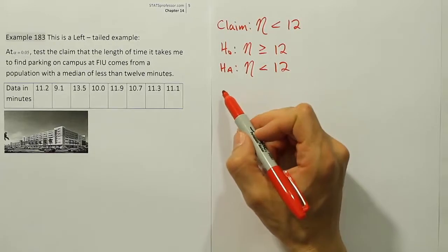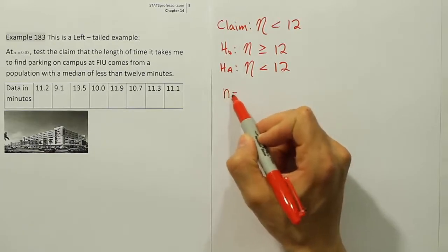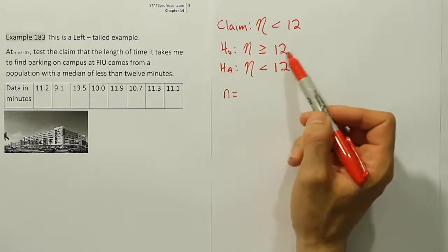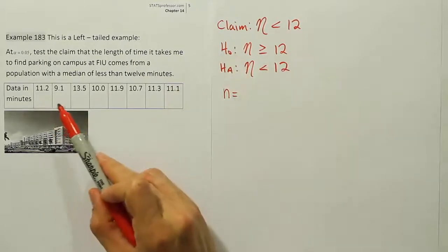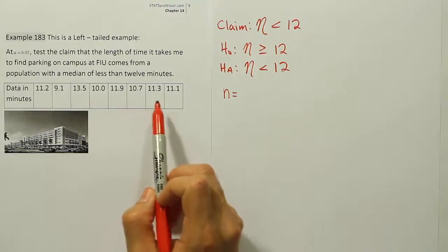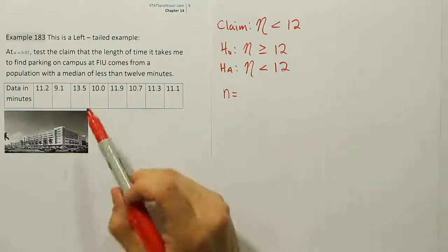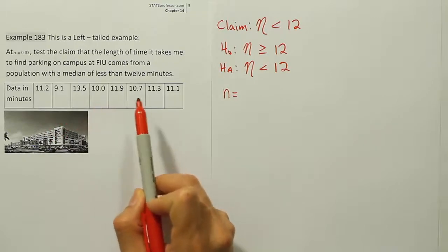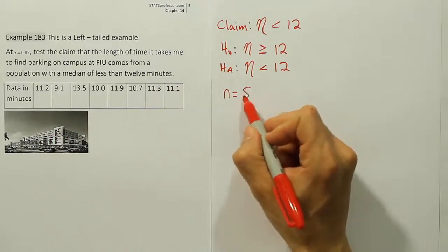From there, I'm going to look at what the sample size is for the problem. I need to know what my n is. Remember, I'm going to discard any number that's exactly equal to the number I see in H0. So if any of these numbers are equal to 12, I will throw it out. There are no numbers equal to 12, so I'm going to count all of them. 1, 2, 3, 4, 5, 6, 7, 8. So my n here is just 8.